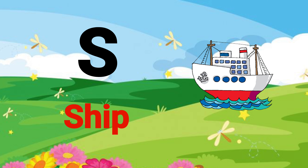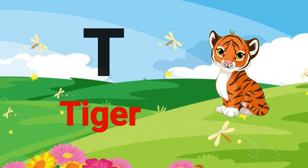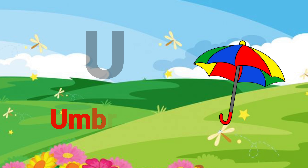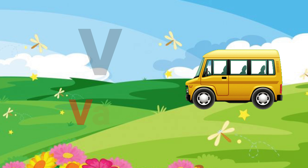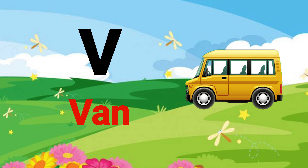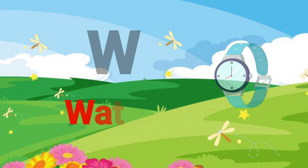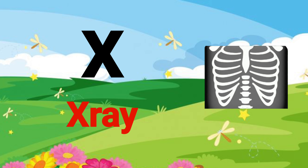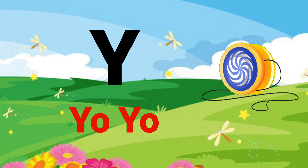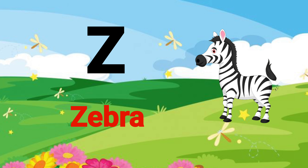S for sheep, T for tiger, U for umbrella, V for vane, W for watch, X for x-ray, Y for yo-yo, Z for zebra.